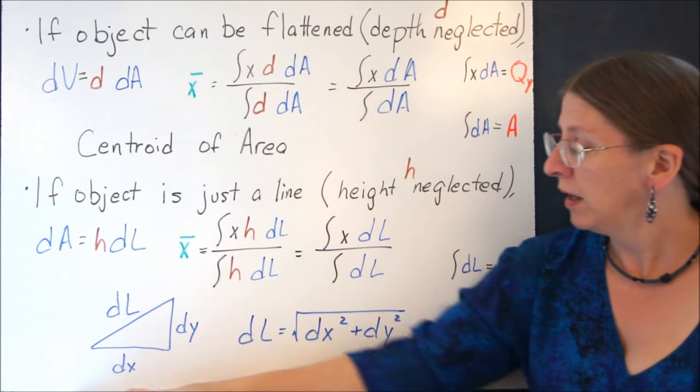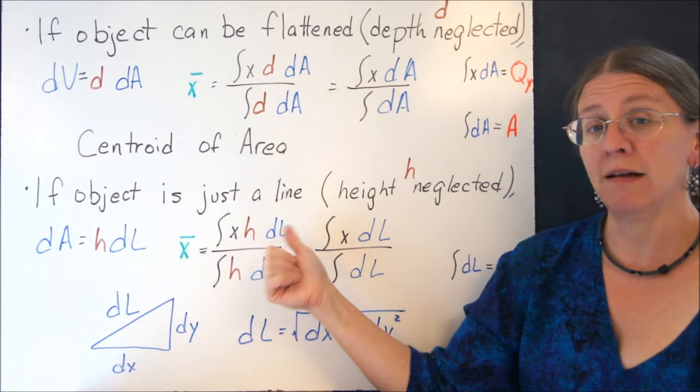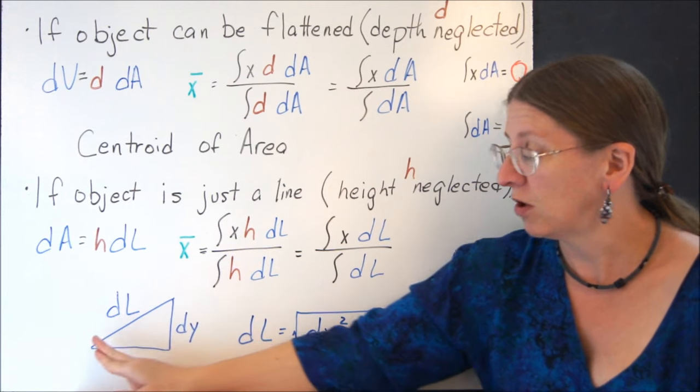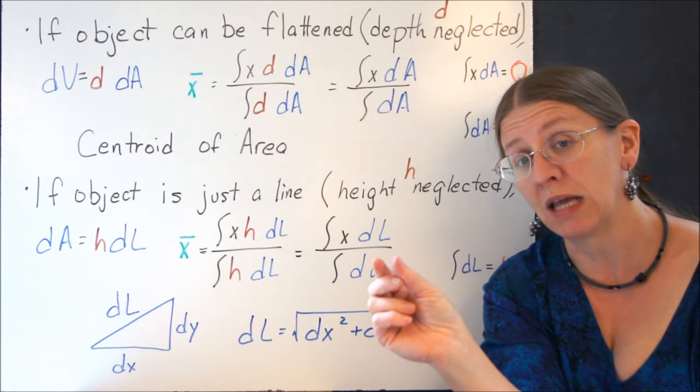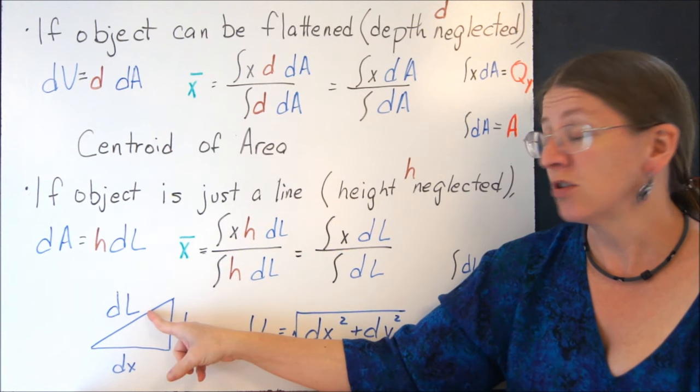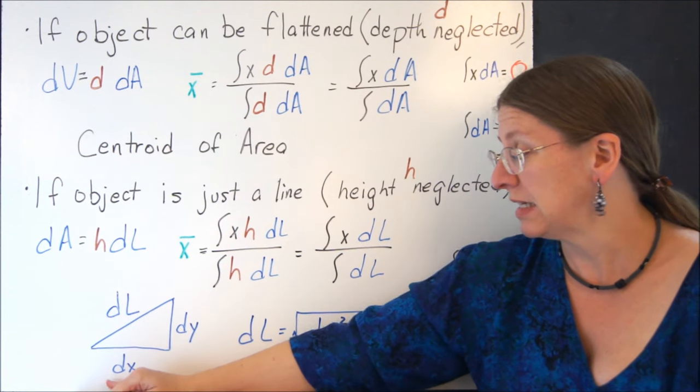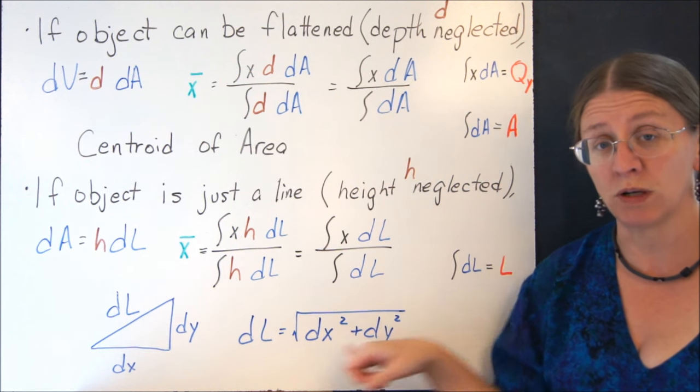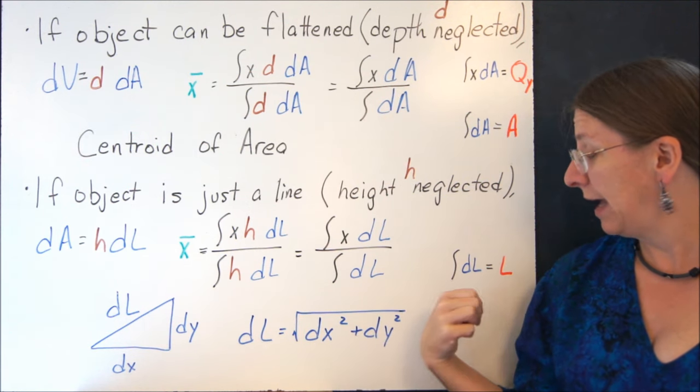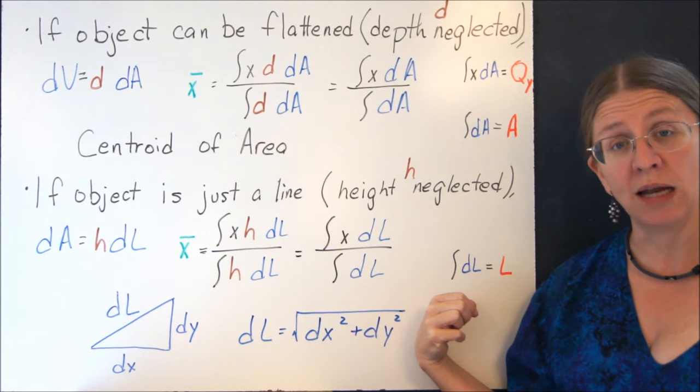One thing about centroid of the line, if you actually think about what is dL, dL is a little bit of your line. So if you're doing cables or something and you want to take just a bit of the cable, this differential length is actually the square root of dx squared plus dy squared. So that's what goes into your integrals. Again, the denominator is the total length of your line.